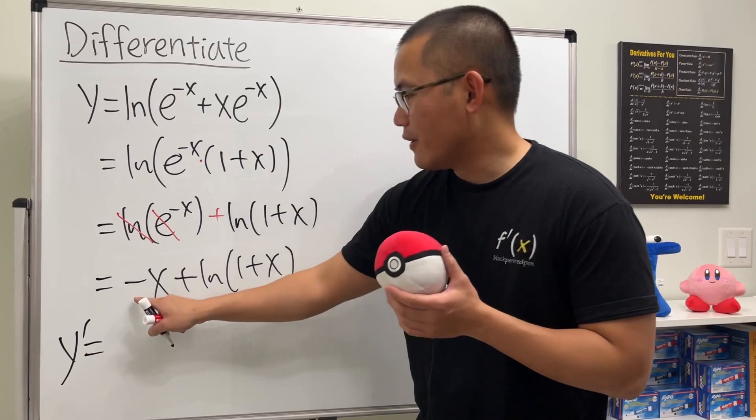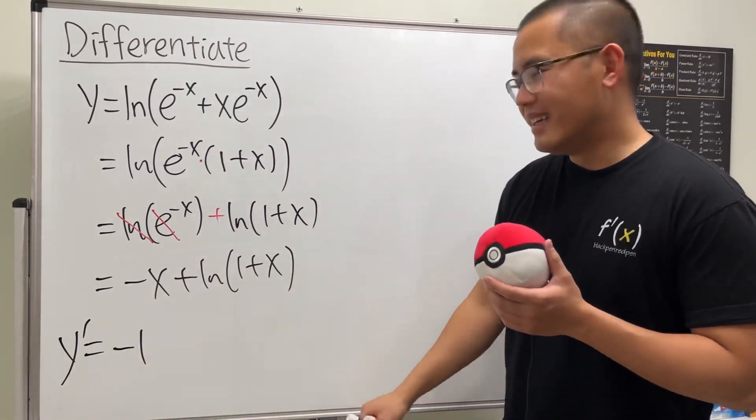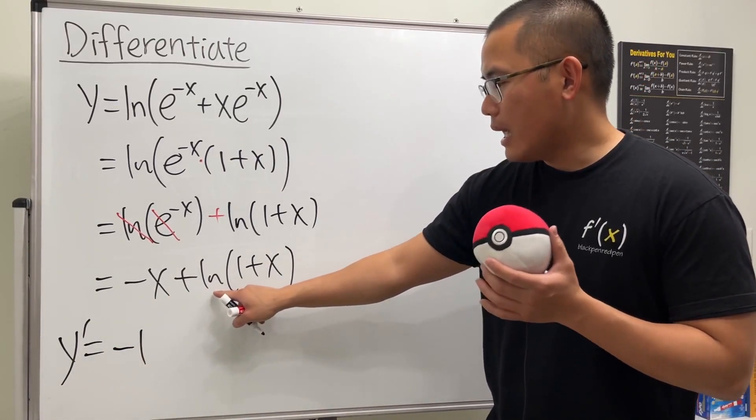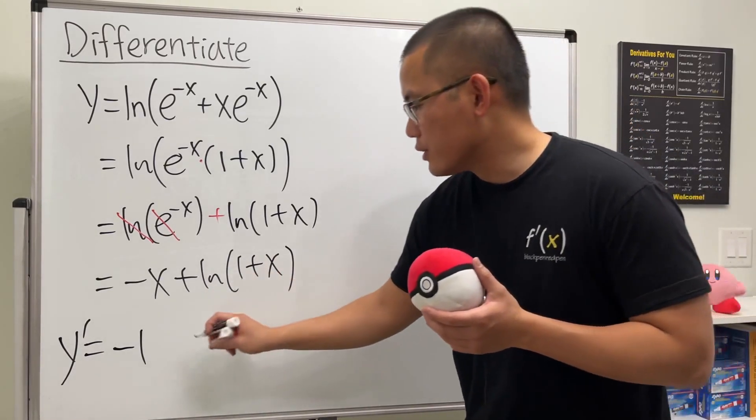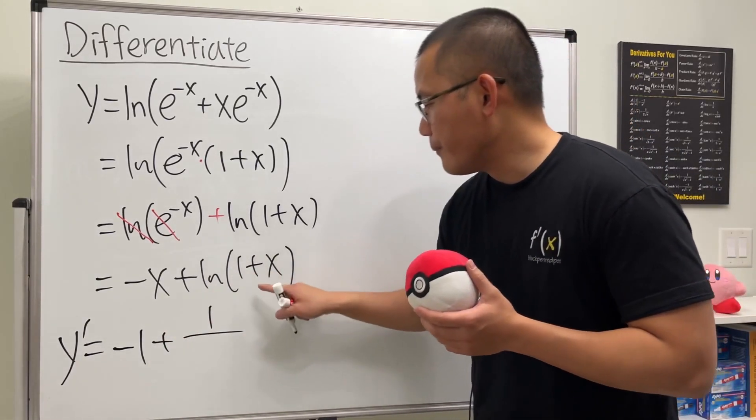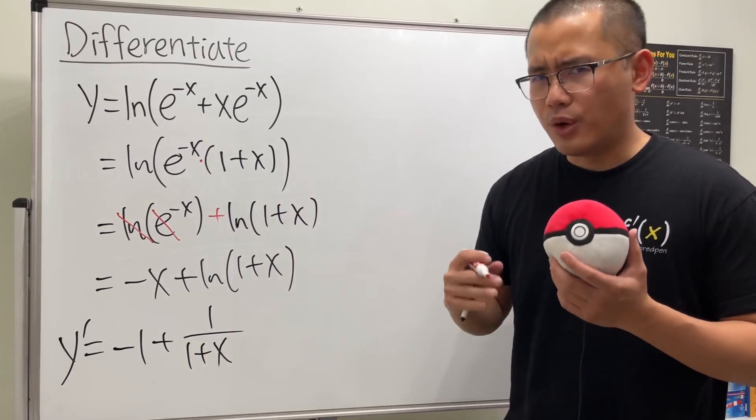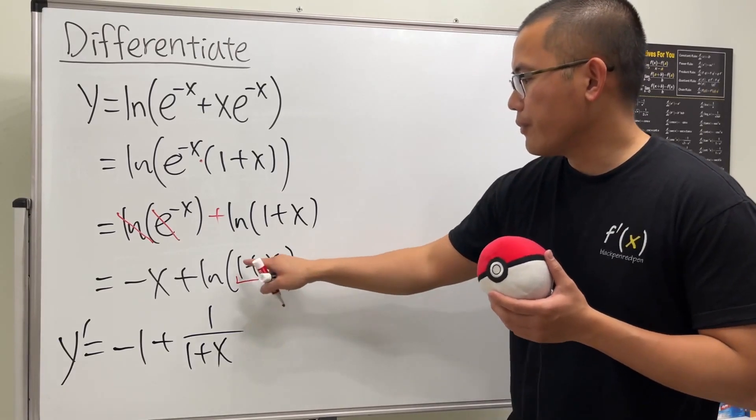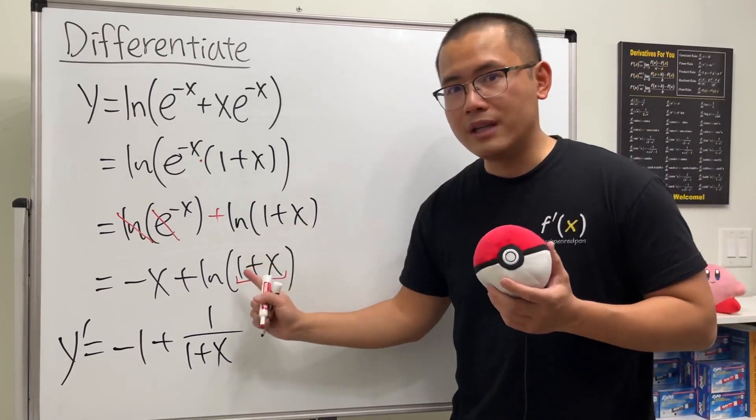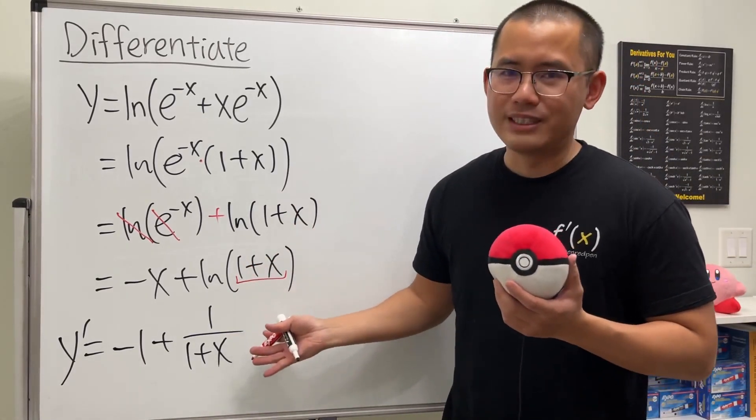The derivative of negative x is just negative 1. Done. And then the derivative of ln of 1 plus x, this is going to give us 1 over whatever this is, which is 1 plus x. And then remember, you should always use the chain rule. But if you look at the derivative of 1 plus x, it's just 1. So multiply by 1 doesn't matter.